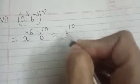So we have to give the answer in positive exponent form. This is negative, so what to do? Write b^10 as it is. Take this to the denominator: a^6.